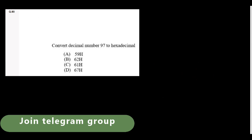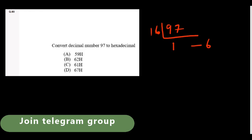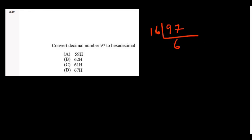Convert decimal number 97 to hexadecimal. Divide 97 by 16: 6 × 16 = 96, remainder 1. So the answer is 61H.